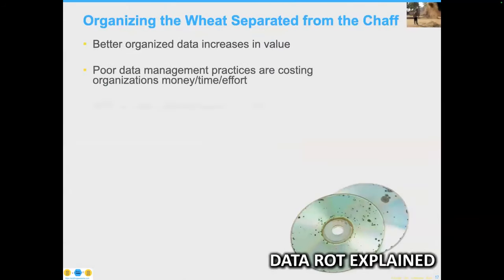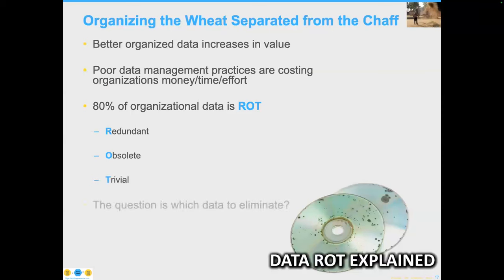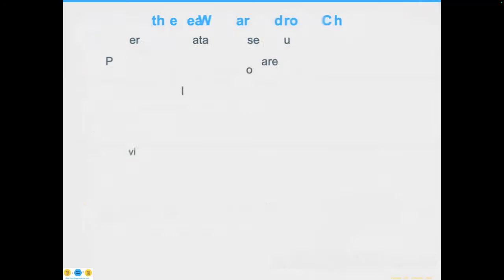It's important to understand that better organized data increases in value. Nevertheless, 80% of organizational data is ROT — an acronym that stands for redundant, obsolete, or trivial. In 35 years of doing this work, I've never had a company tell me they have less than 80% ROT; many go as high as 90%. The question becomes, which data do you eliminate? And when most enterprise data is never really analyzed in the first place, it becomes more challenging.